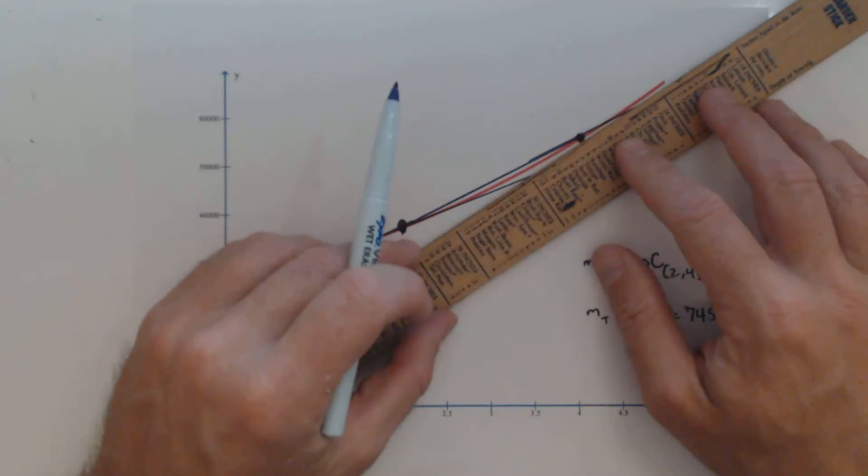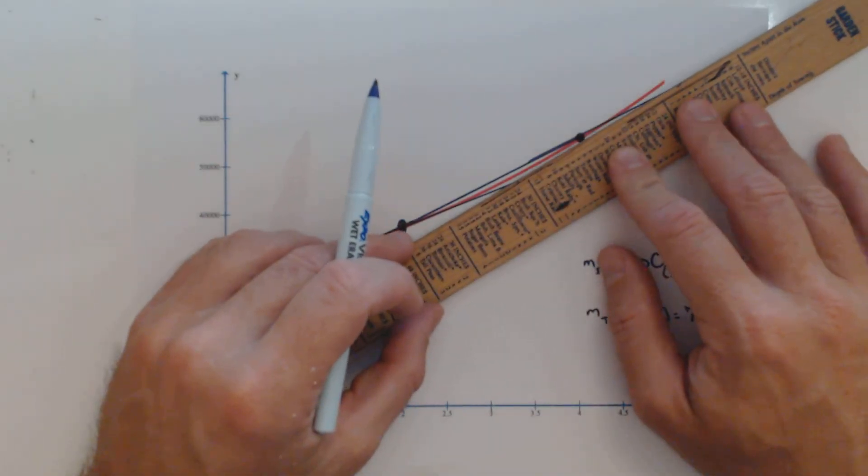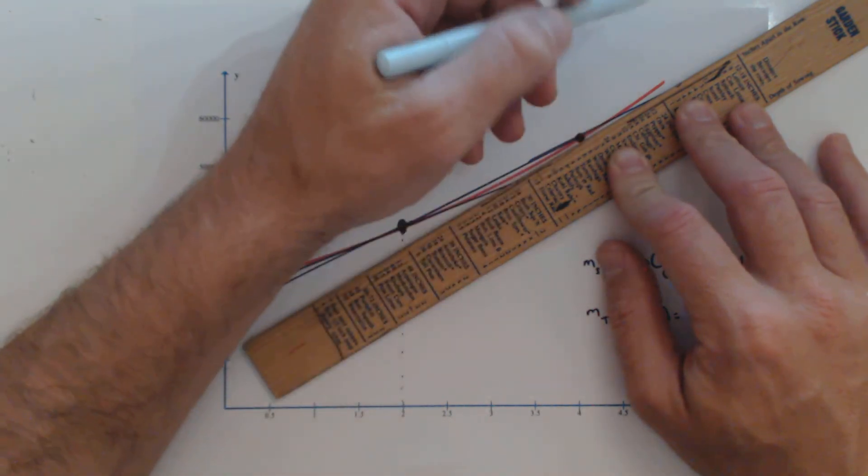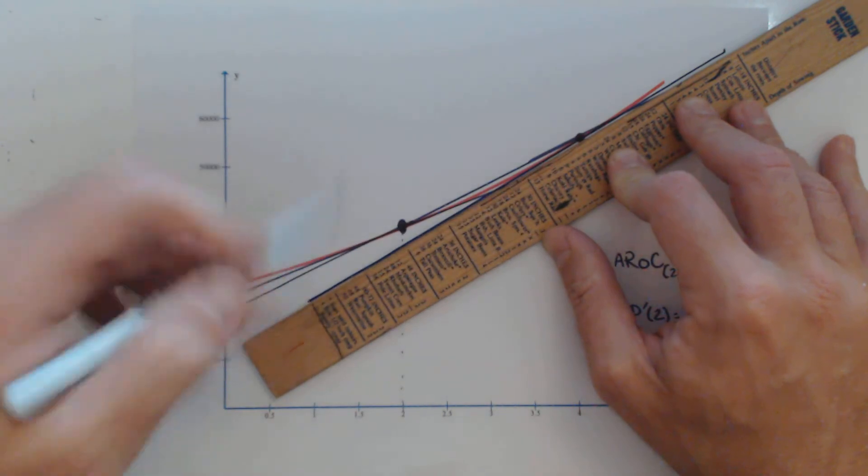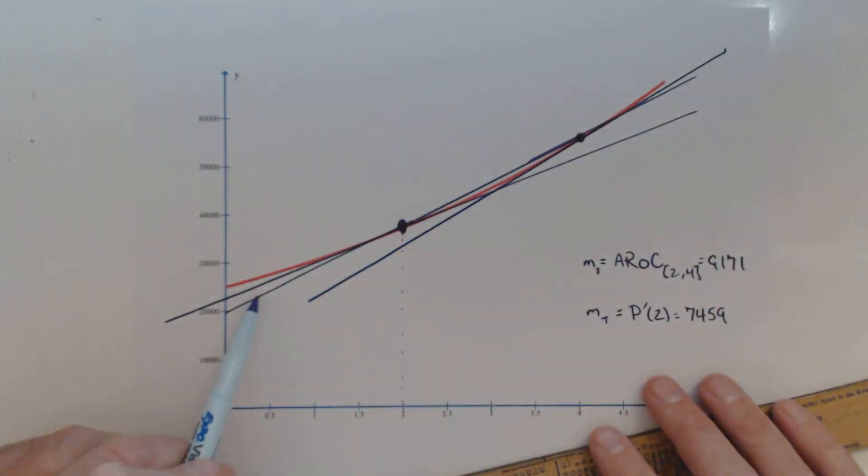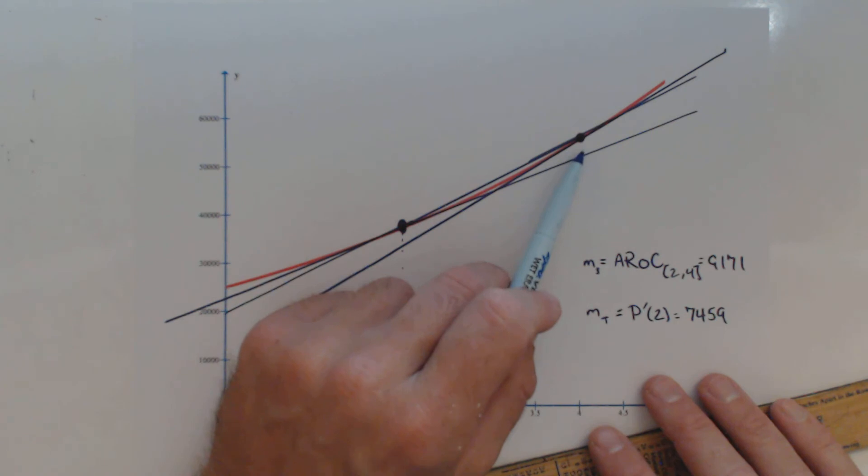we would get a line that's even steeper, not only than our tangent line at 2, but steeper than our secant line as well. So we would expect this value to be larger than 9,171.